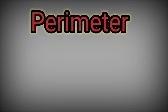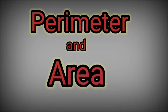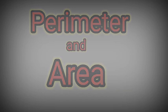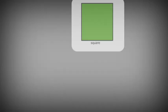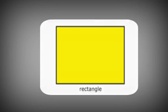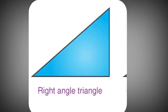In Class 6 you have studied about perimeter and area of plane geometrical figures like square, rectangle, and right angle triangle. Let's see some examples of such plane figures: triangle, square, rectangle, and right angle triangle.